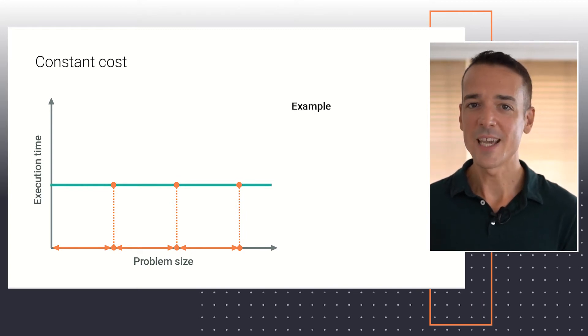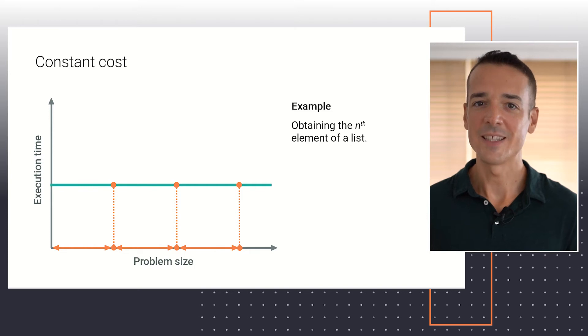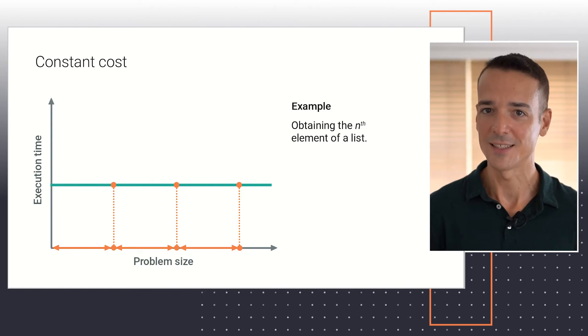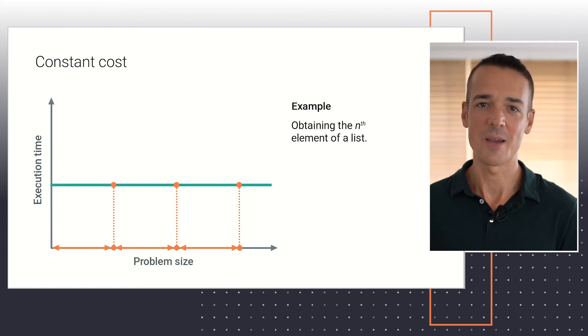An example of a container operation that runs in constant cost is obtaining the nth element of a list. The time it takes for Python to return this element won't depend on how many elements are currently present in the list. We'll revisit this idea when we cover lists in detail later in the chapter.